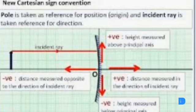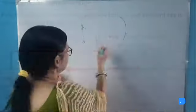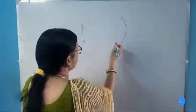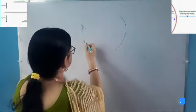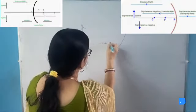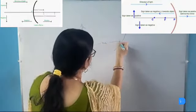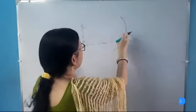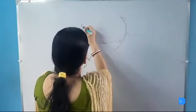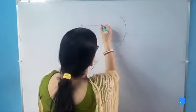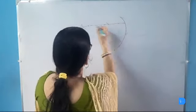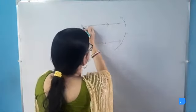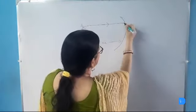We always place an object on the left hand side so that the incident light can travel from left side to right side. Thus in new Cartesian sign convention, object distance is always considered as negative because it is on the left hand side of the mirror or against the direction of the incident light. The incident ray will travel from left side to right side.